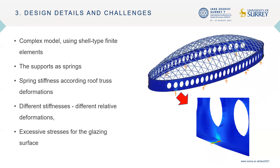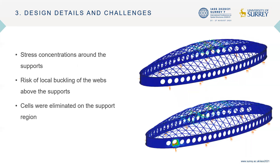For the design we used complex shell-type finite element models to check the skylight, and for the whole structure we used a bar-based 3D structural model. For the shell-type finite element model we used spring stiffnesses derived from the relative deformations intercepted from the 3D bar model calculation. The main problem was to avoid excessive stresses which can be very dangerous for the glazing surface. The stress concentration around the supports creates some local buckling problems on the web of the beam, and finally we decided to eliminate the cells in the region of the support.